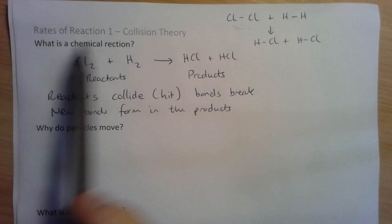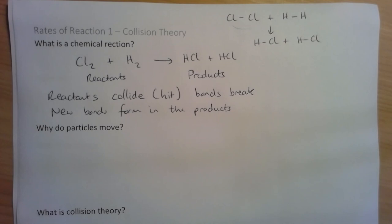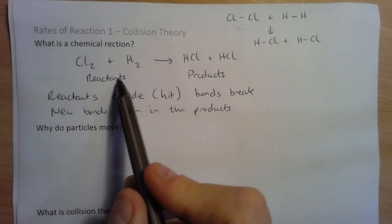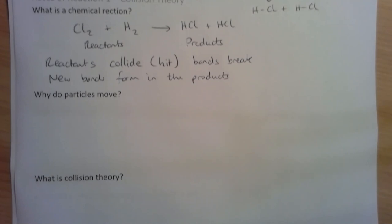The key idea here is that during a chemical reaction, the reactants — which are on the left-hand side of the chemical equation — collide, and then the bonds break, rearrange, and we make new products.